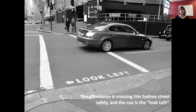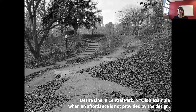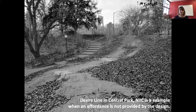Desire lines illustrate where an affordance didn't quite match what people wanted, so they created their own path. Those visual cues are critical to how people take up actions in a space. It's important to remember that the cues we design in determine how people actually use and move through the environment.